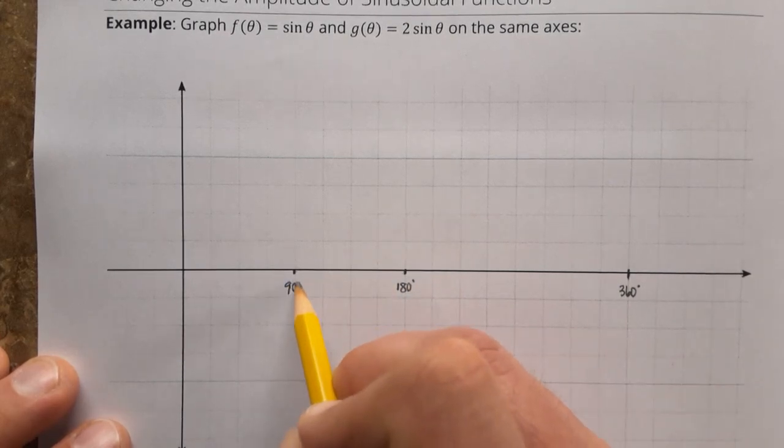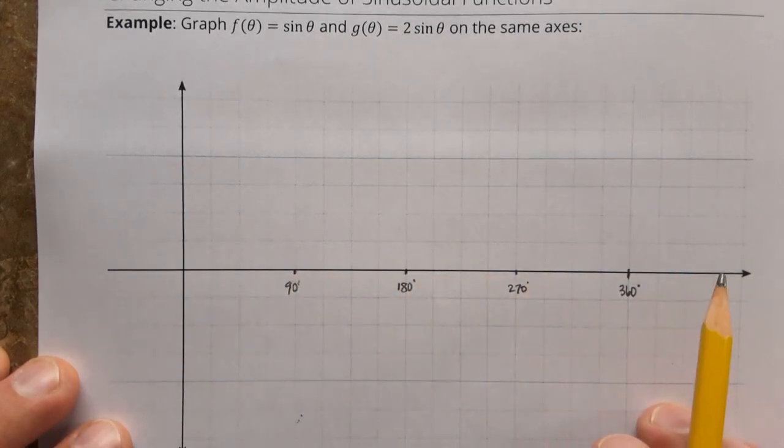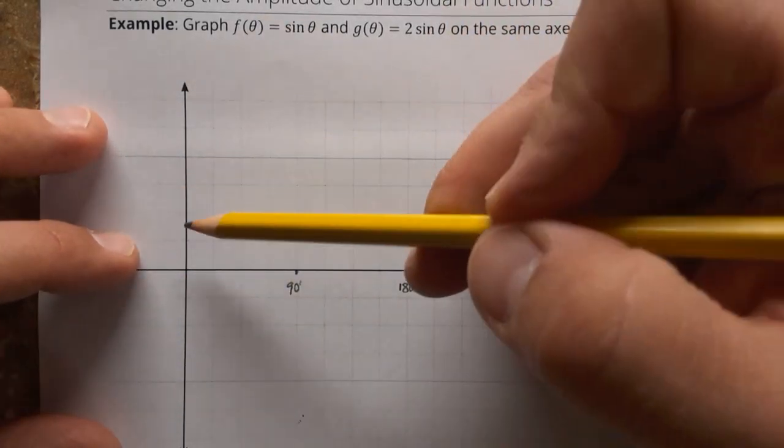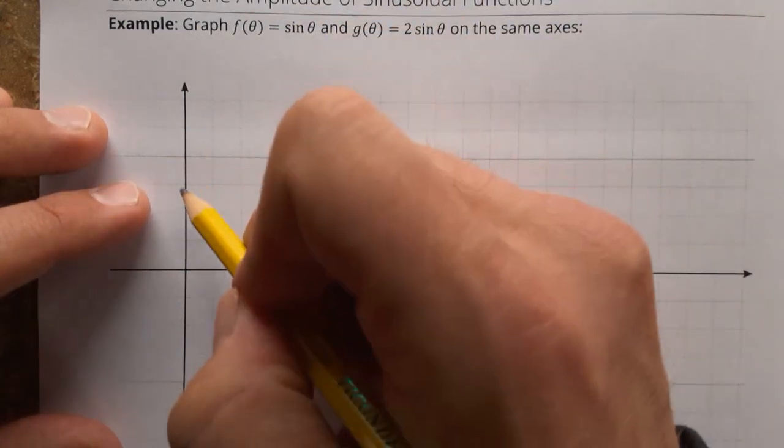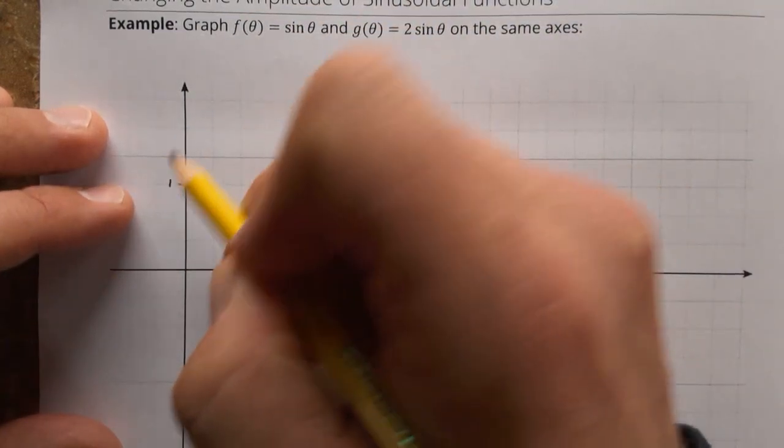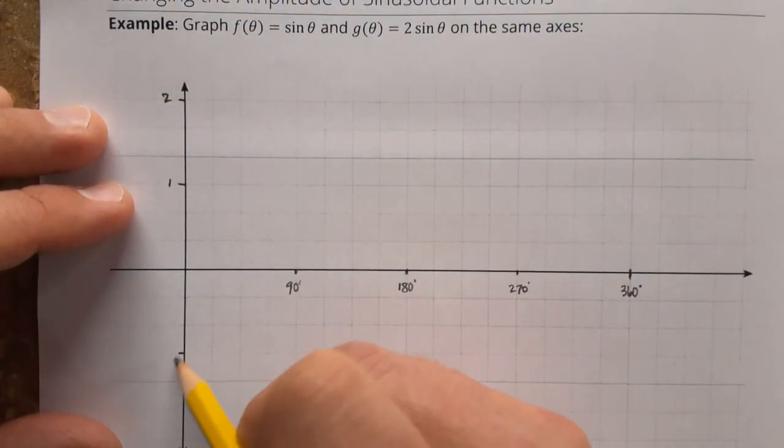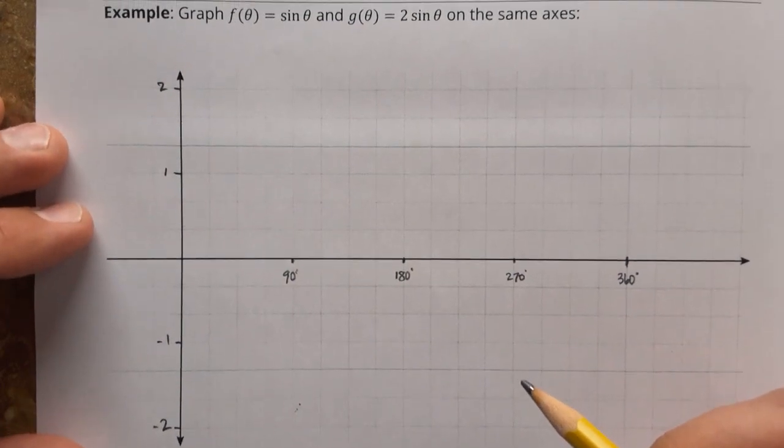That's 90. And there's 270. Now it's a good strategy to break your graph up into four equal sections like this, because those are going to give us the key points for our graph. Now, vertically here, I've got one, two, three, four, five, six. So I'm just going to choose this as one and this as two. Negative one and negative two. Okay, so I'm going to start by graphing f, which is sine of theta.